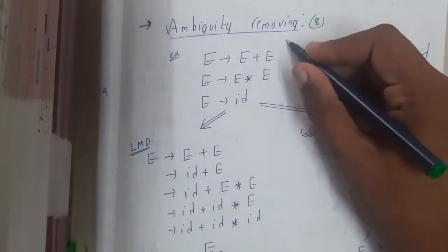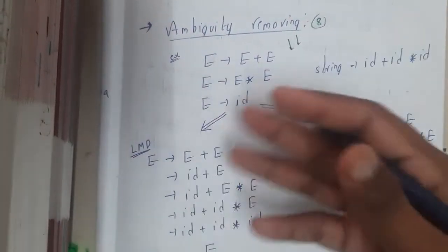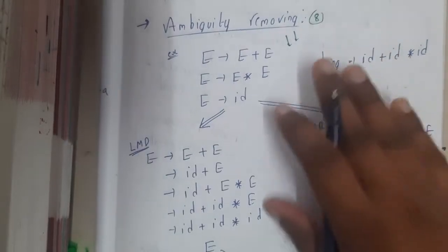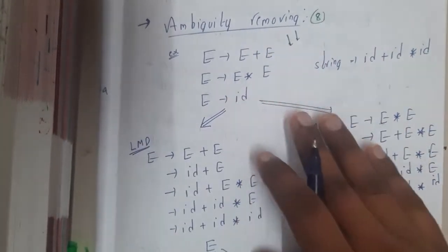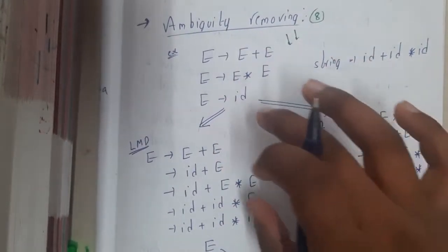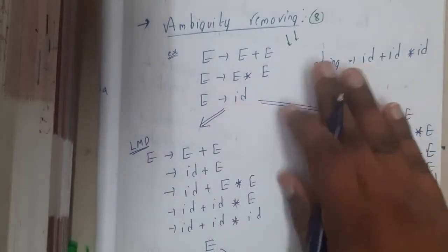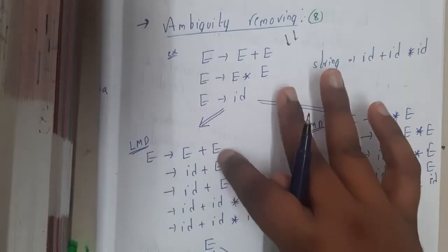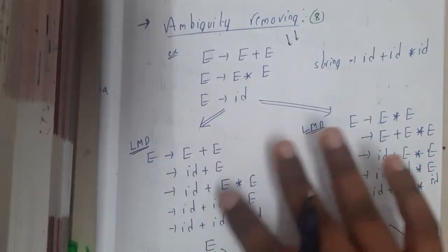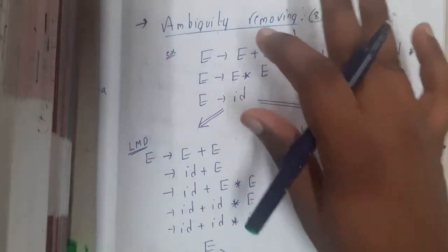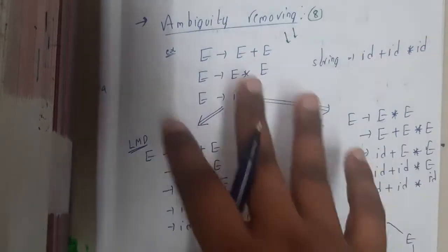Basically, removing ambiguity is not that easy for a particular grammar because there is no particular method or steps which you can follow. You need to understand how it is happening, and you should make sure that the power of the grammar before removing and after removing should be exactly the same. Only then you can say that you removed the ambiguity of the grammar without any issues.